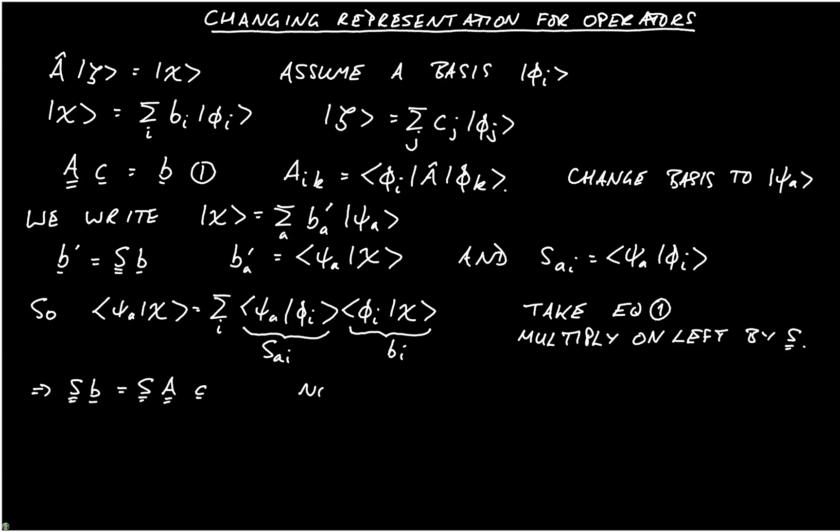So we get S acting on b is equal to S A c. Now we know that S S dagger is equal to the identity, but that's also equal to S dagger S.